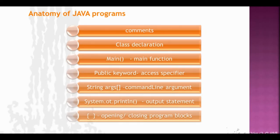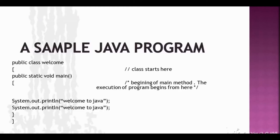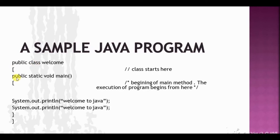A sample Java program has a structure like this: first we have 'public class Welcome', then an opening curly brace, then 'public static void main'. Here 'public' is the access specifier which shows that the members of this class will be accessible globally. 'class' is a keyword and 'Welcome' is the name of this class.